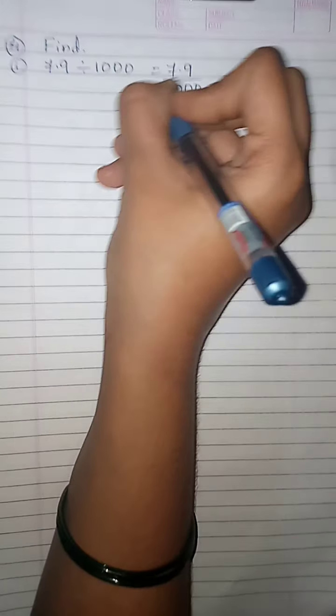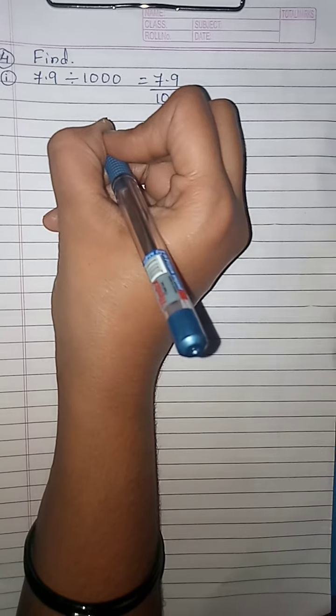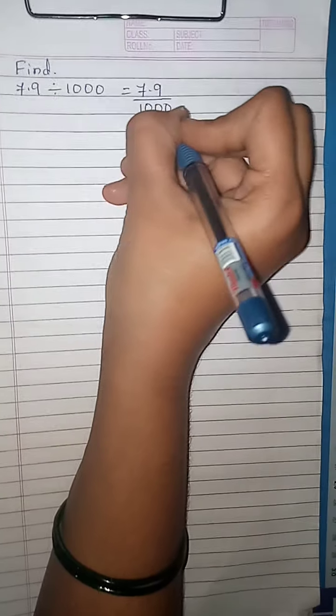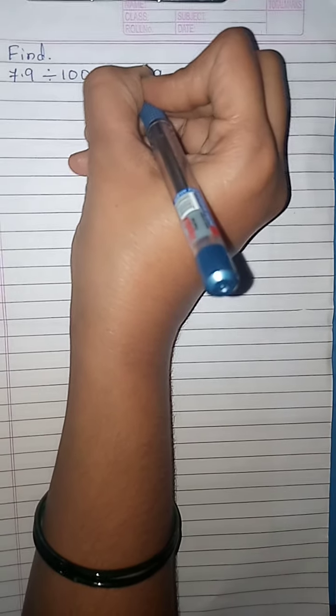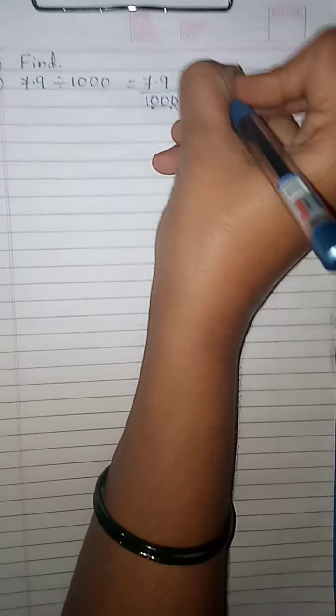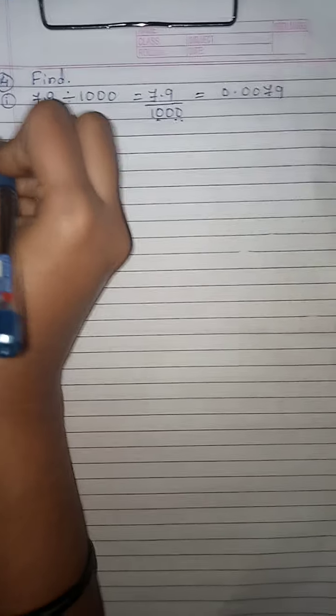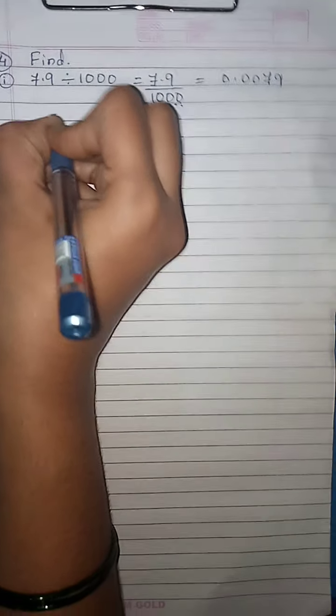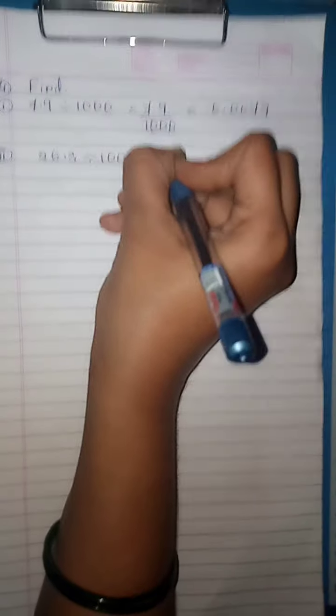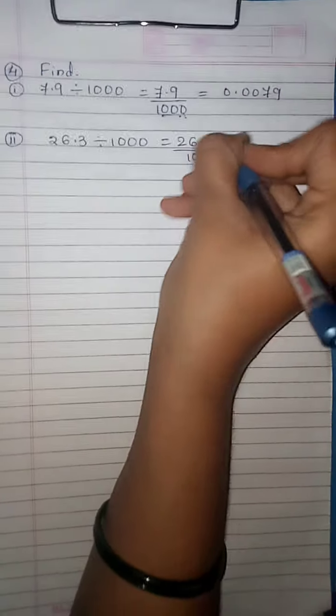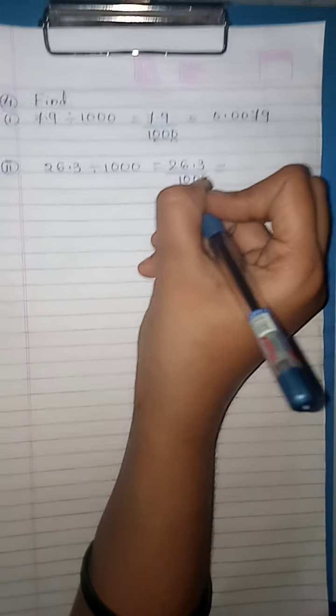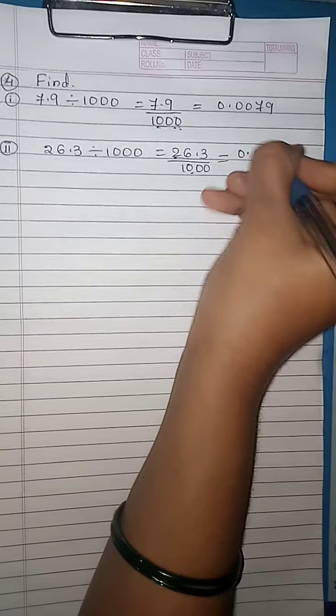Take the fourth section. First one: 7.9 divided by 1000. In 1000 there are 3 zeros. On dividing a decimal number by 1000, the decimal point is shifted to the left by 3 places. There is already 1 digit here, so add 2 more zeros. You get 0.0079. Take the second one: 26.3 divided by 1000. There are 3 zeros. On dividing by 1000, the decimal point shifts left by 3 places. There are already 2 digits here, so add 1 more zero. You get 0.0263.